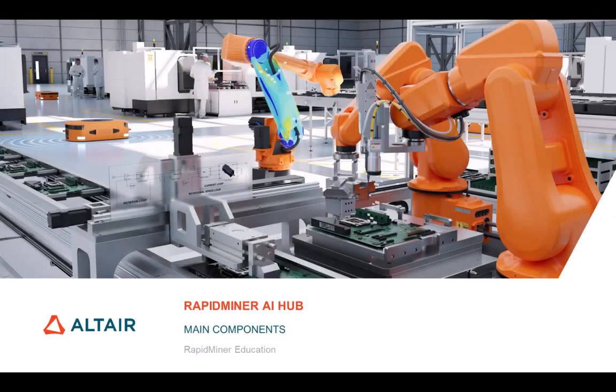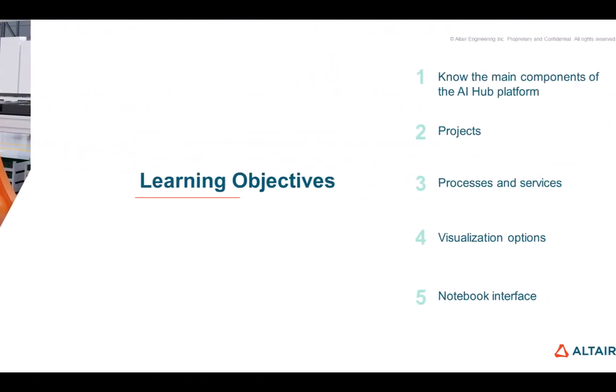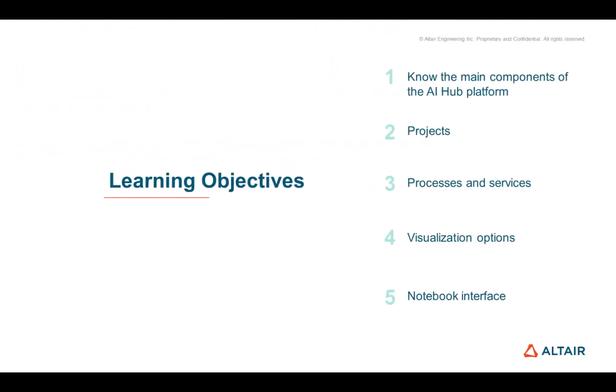In this video, you will get an overview of the main components in Altair RapidMiner AI Hub. We introduce the main components of the AI Hub platform like projects, processes, and services, some visualization options, and the notebook interface.